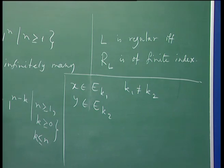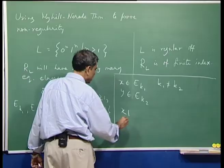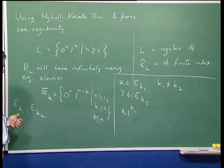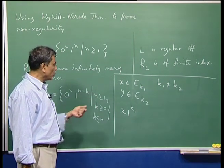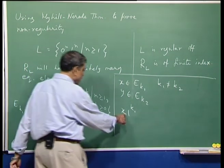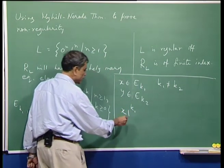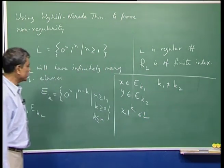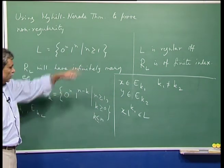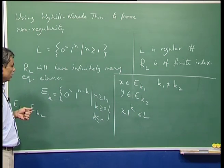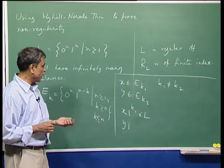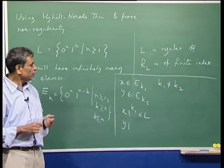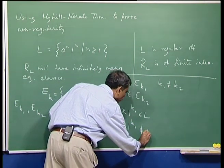Consider the string x · 1^{k1}. Remember, x has some n number of zeros and n minus k1 ones. If you append k1 ones after x, this will have equal numbers of zeros and ones, so x · 1^{k1} will be in the language. Whereas if you take y from E_{k2}, the deficiency is k2 ones, and k2 is different from k1, so y · 1^{k1} will not be in the language.